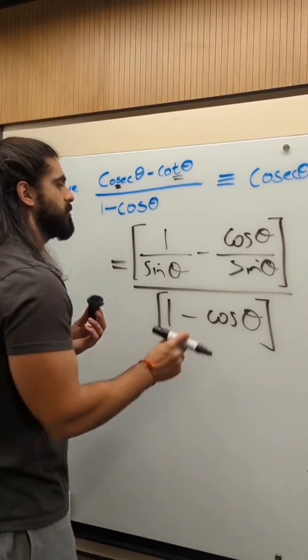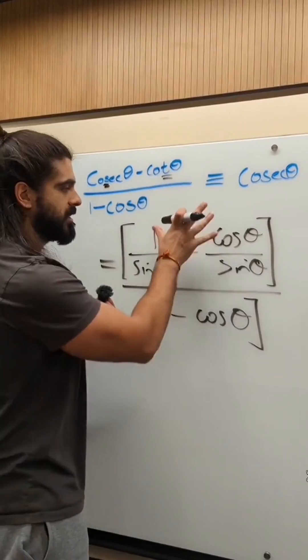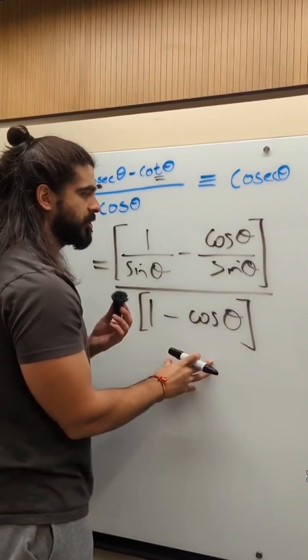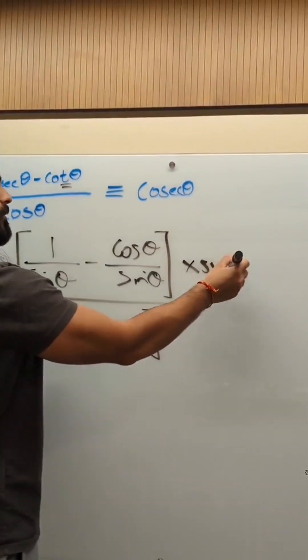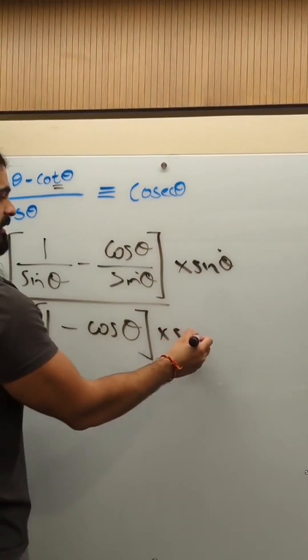The next thing we do is we get rid of denominators within either the numerator or the denominator or both. Here, the only issue is the sine theta. So we times top and bottom by sine theta.